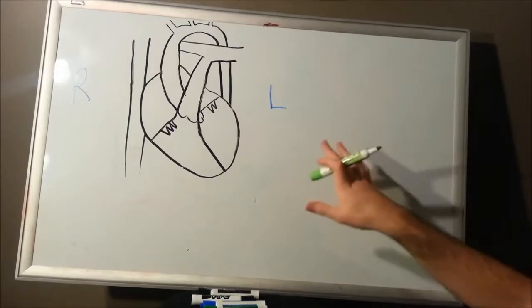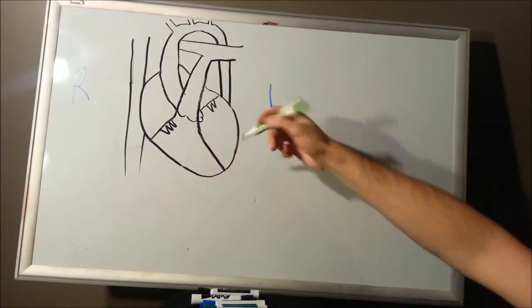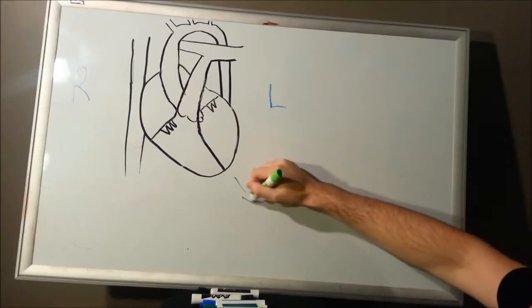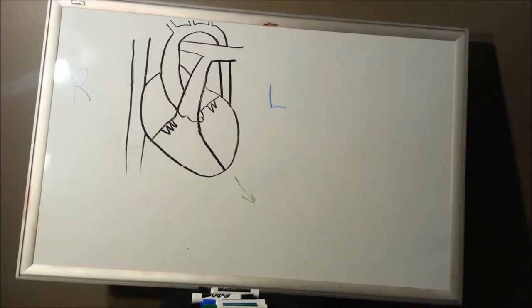As you can tell, I labeled left and right in this image. Left is going to be on this side, right. The heart is going to face down towards the left hip. And likewise, it's going to be situated a little more towards the left side.